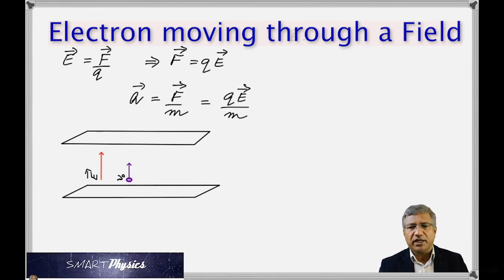And to calculate that, let's assume that the electric field is 10,000 newtons per coulomb. And let the initial velocity be 10 to the power 7 meter per second. I'm going to show you what happens if the initial velocity is 10 to the power 7.